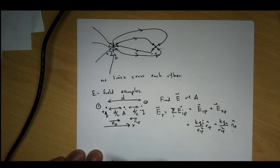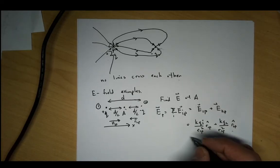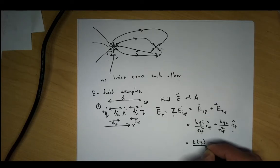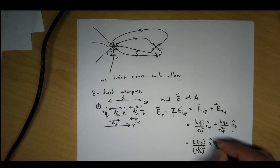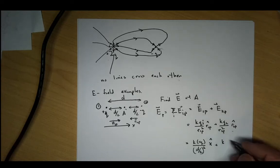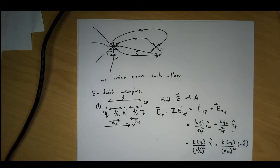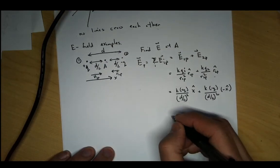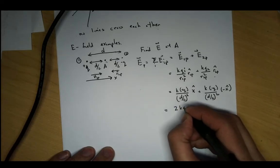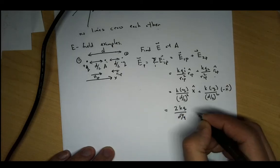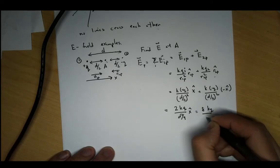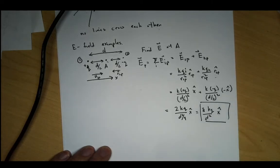R2P points in the minus x-hat direction and R1P points in the positive x-hat direction, both with distance D/2. Substituting: K times plus Q over (D/2) squared times x-hat, plus K times minus Q over (D/2) squared times minus x-hat. The minus times minus gives positive, so both terms add together to give 8KQ over D squared in the x-hat direction.